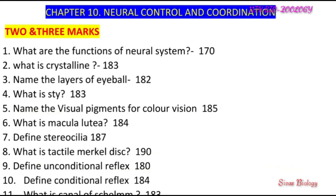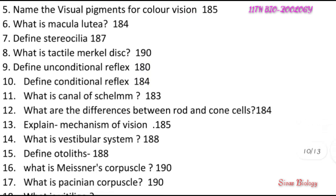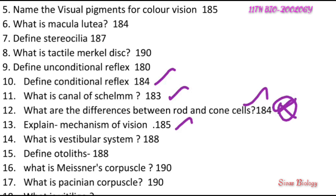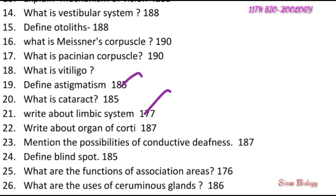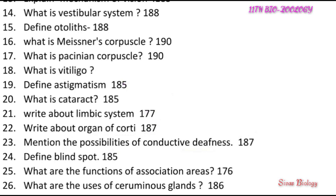Chapter 10: functions of the neural system, rays of the eyeball, macula lutea. Conditional reflex, canals of the skull, difference between rod cells and cone cells — most important question. Mechanism of vision, vestibular system, astigmatism, limbic system, organ of Corti.